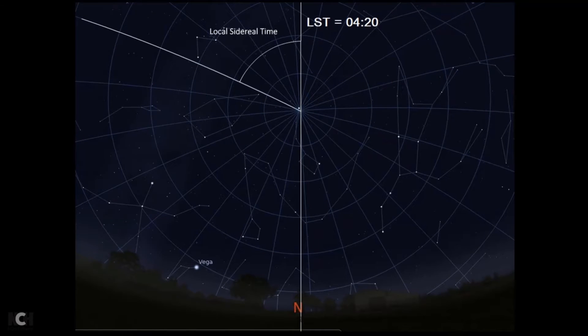Your local sidereal time is how far round, how far west of your local meridian the first point of Aries is. This other line goes to the first point of Aries, and on this particular picture here, the local sidereal time is 04:20.